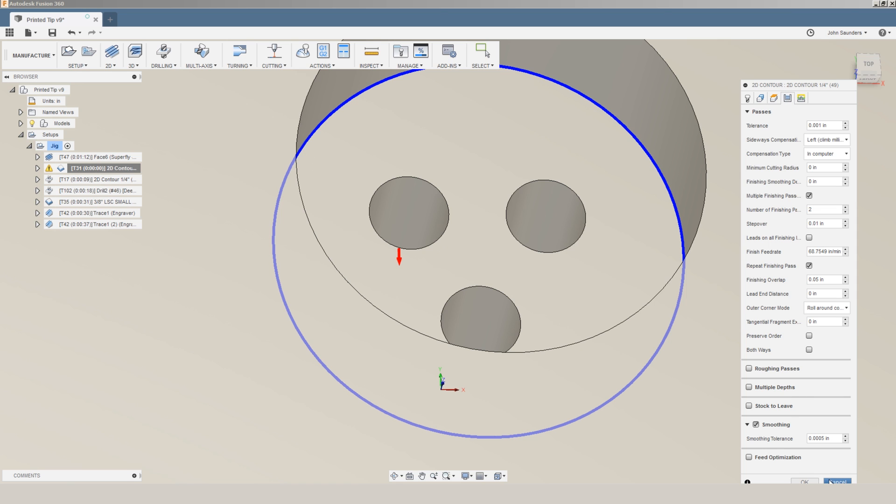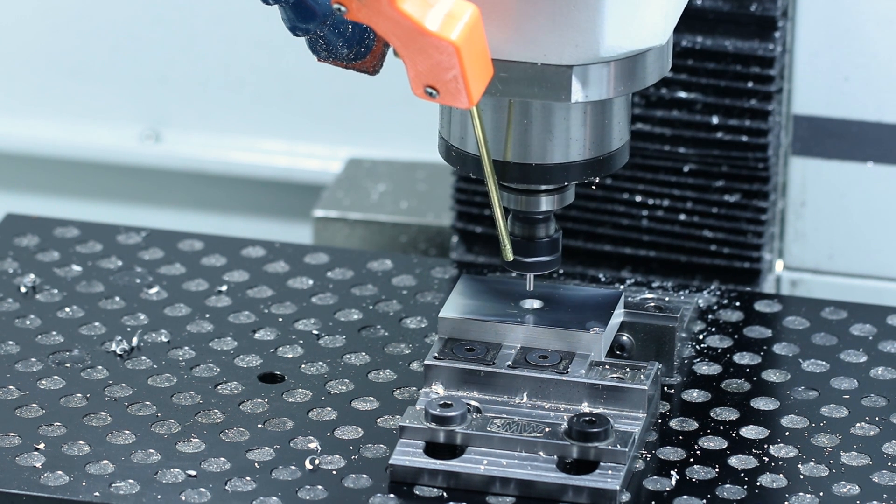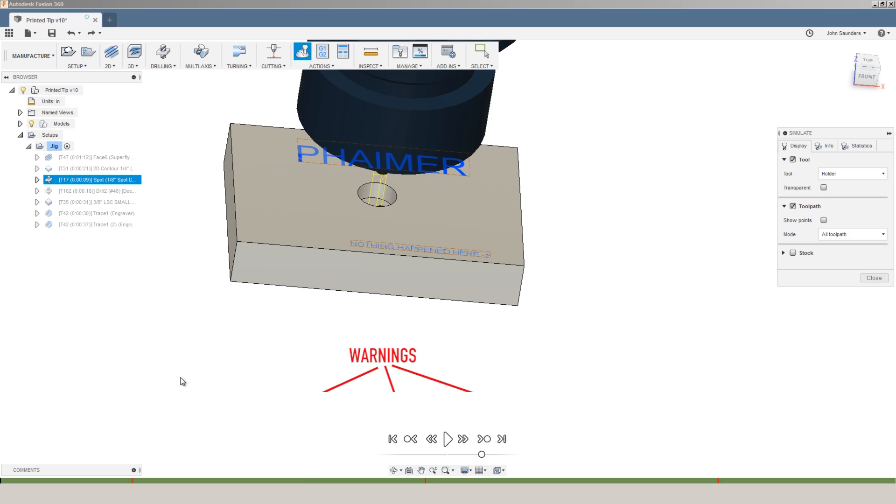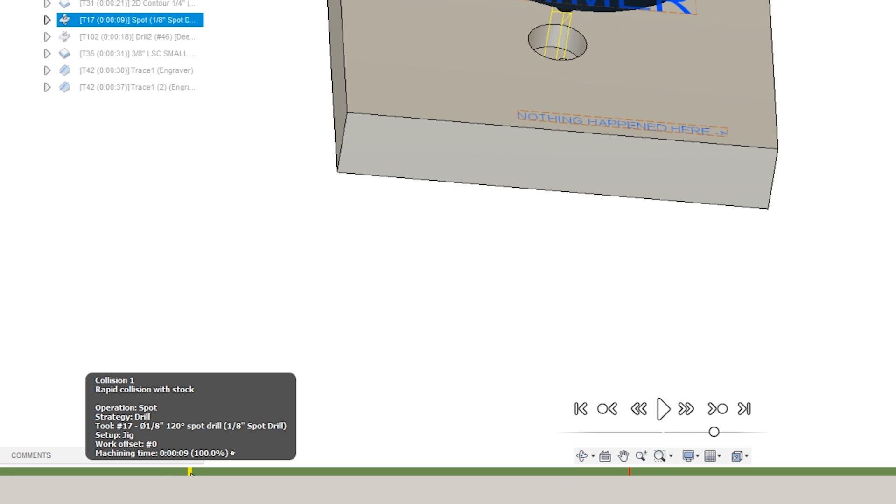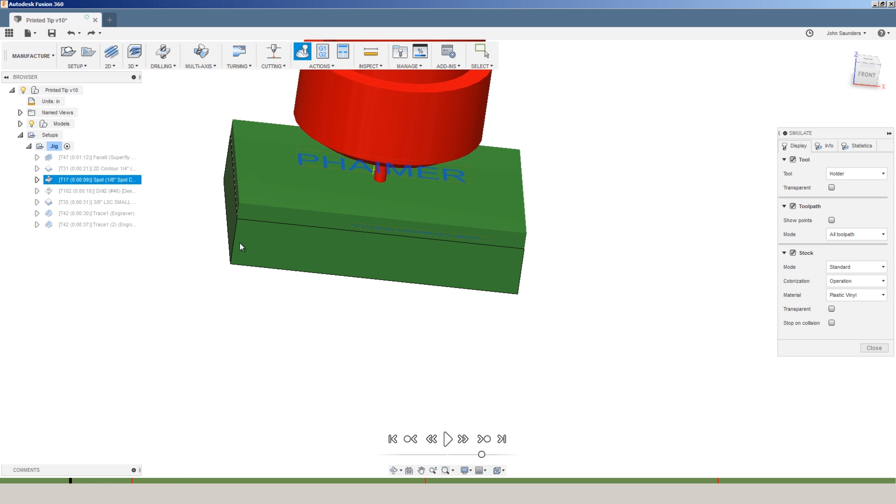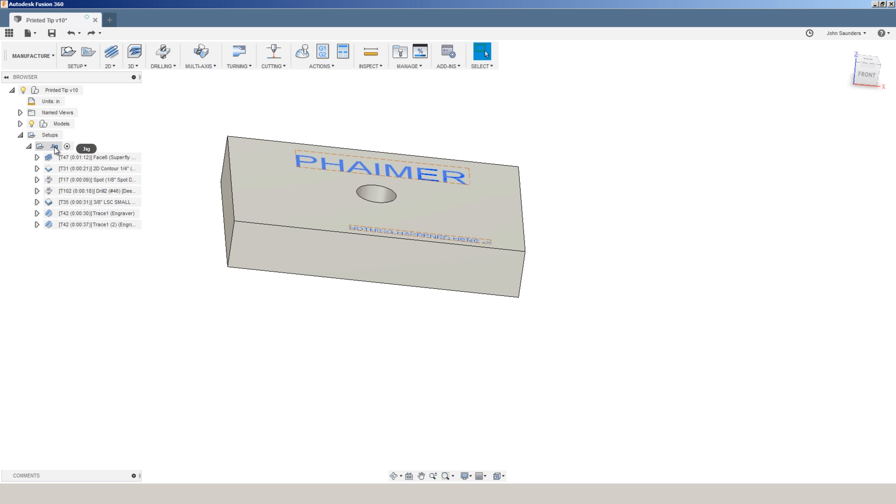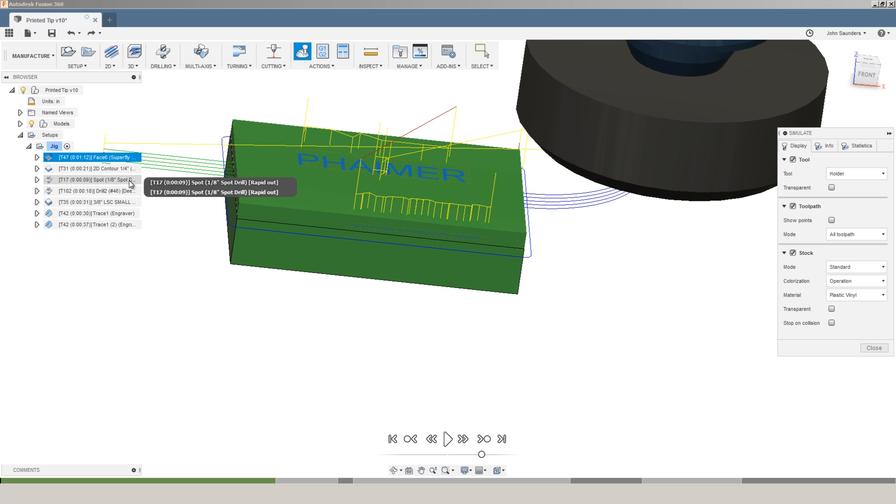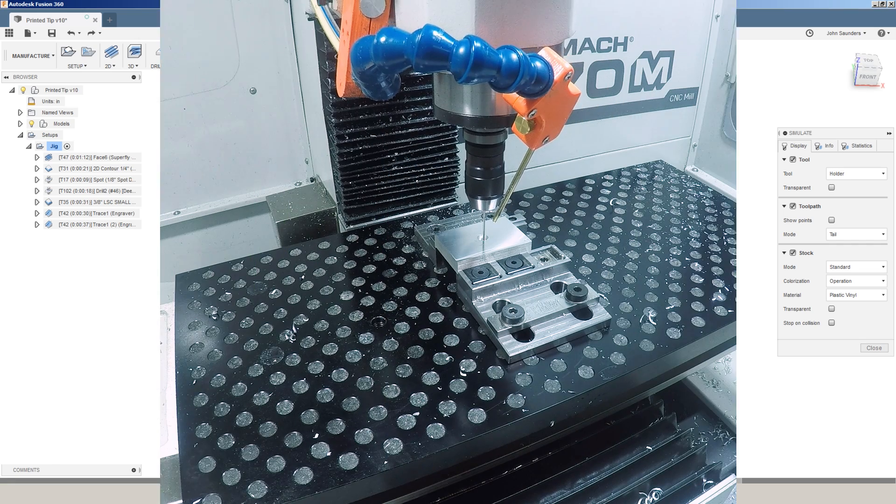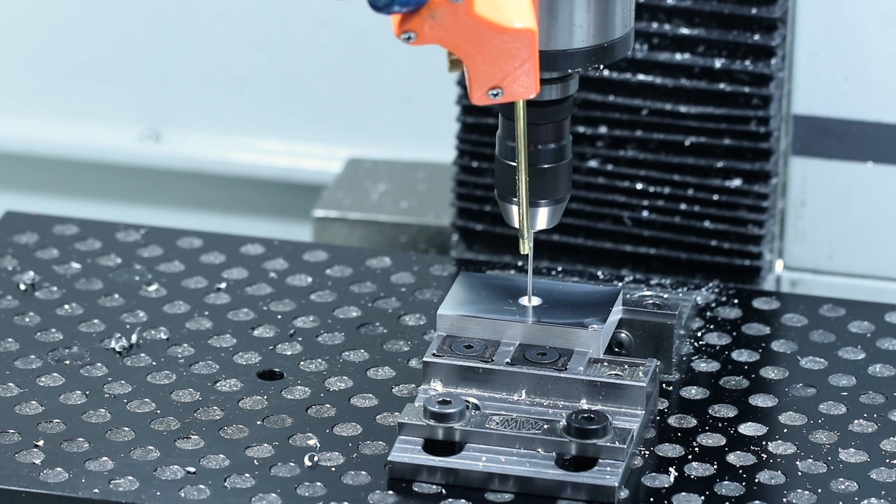Three quick spot drills. Now if you notice, Fusion's giving us three red lines in our simulation timeline. We hover our mouse over one, you can see it says rapid collision with stock. So Fusion thinks at this point the tool is going to be rapid plunging into material. That material's already been machined away, but Fusion doesn't know that because we're only simulating from the spot. So the proper way to check that would be to simulate from the setup, choose simulate, and then you can click on the operation you care about. It's now correctly simulated, the material's gone, and we no longer have any crash warnings.